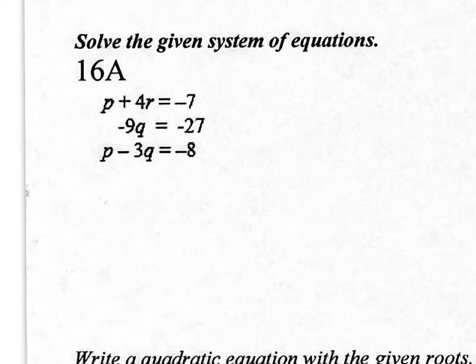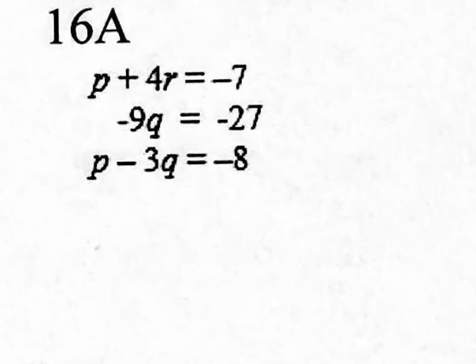Number 16 is pretty easy because it's not really a 3x3 system. It looks like a 3x3 system, but if you look at the middle equation, that already gives you an answer. If you focus on negative 9Q equals negative 27 and divide by negative 9, you get Q equals positive 3.